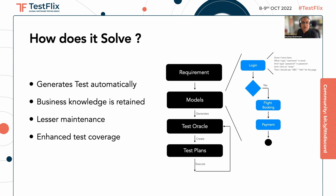If you look at the example here, your model can be — given an example — that you have a login box and then there's a decision. If the decision is yes, if the login is successful, you will do the flat booking and payments. This is a small end-to-end model. What we have done is created an underlying feature which is translating to that particular process. When you ask the tool to start generating your cases, you would see that it can generate this as a step or as a feature, and you can have a series of end-to-end features which could translate to your end-to-end scenario. This is how model-based testing would help you.